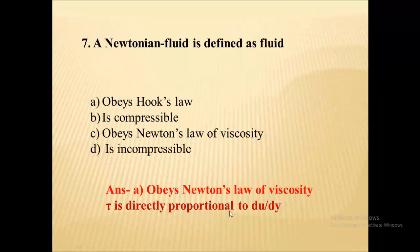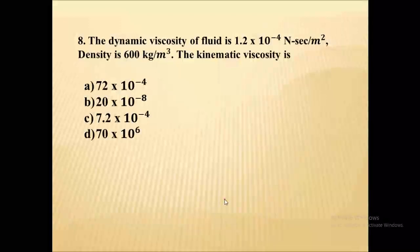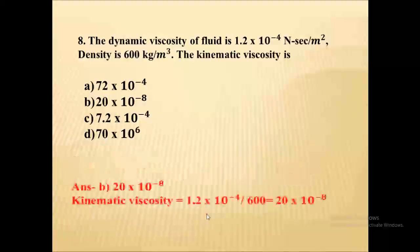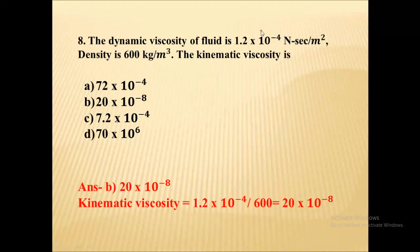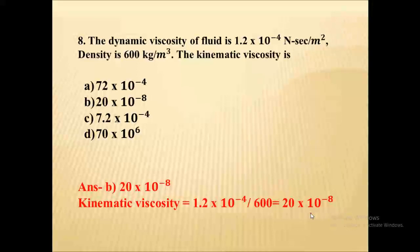Next, the dynamic viscosity of a fluid is 1.2 × 10⁻⁴ newton second per square meter and density is 600 kg per meter cube. The kinematic viscosity is dynamic viscosity divided by density. Putting the values, you get 20 × 10⁻⁸ as the kinematic viscosity.